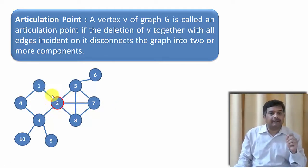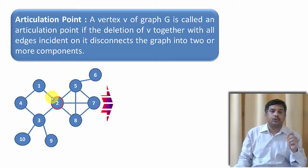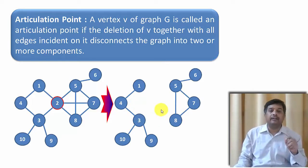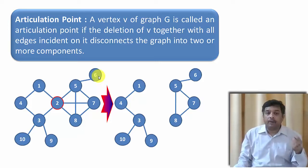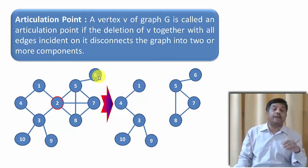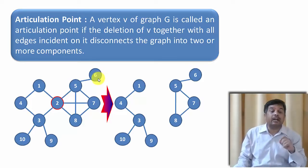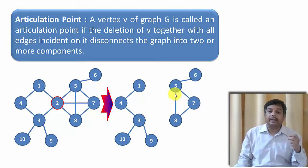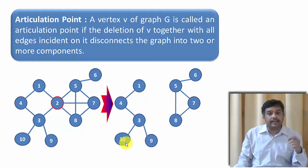Let us see an example. Let this be a graph given, and we are going to delete vertex 2. So along with vertex 2, whatever edges associated with vertex 2 will also be deleted. We will be getting such a graph, and now this graph is a disconnected graph. What is a disconnected graph? From every vertex, if I can reach every other vertex, then that particular graph is called a connected graph. But in this graph, from 10, I cannot reach 5. So from every vertex to every other vertex, I am not finding a path. So this is a disconnected graph.